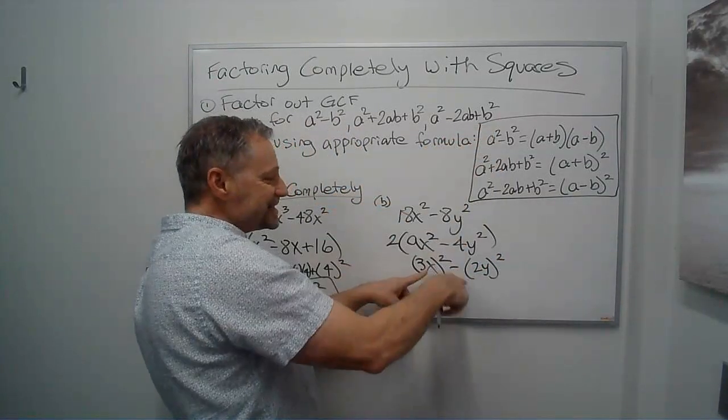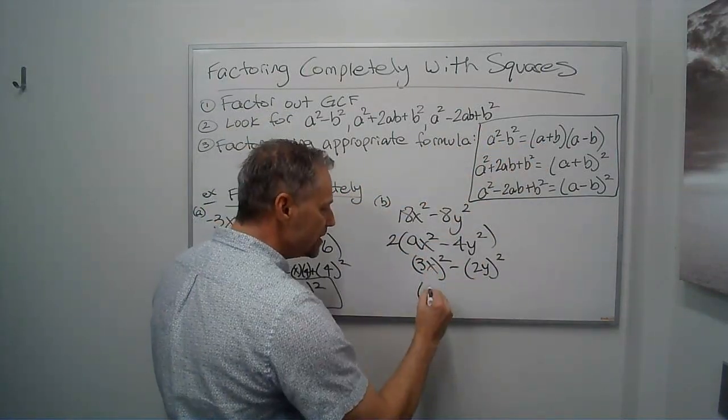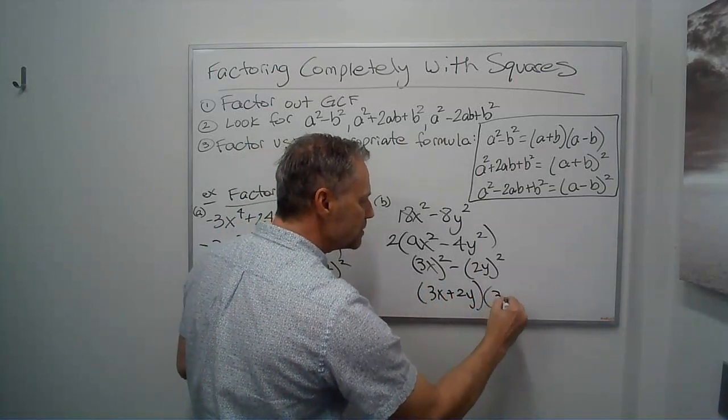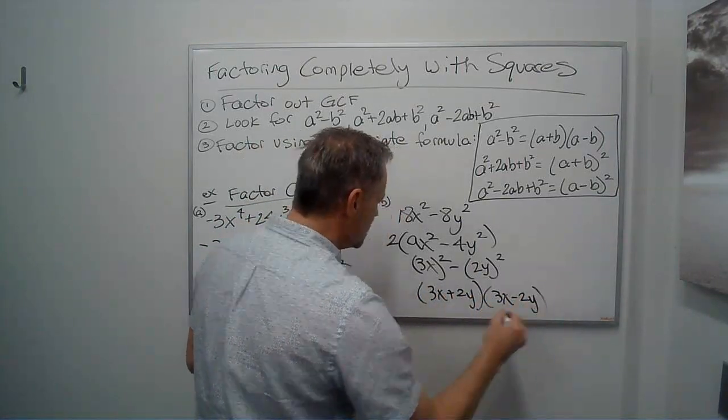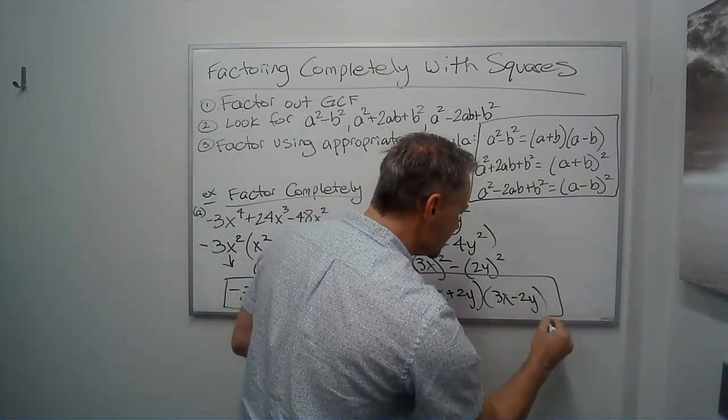So by this, it fits this pattern, so it has to be 3x plus 2y times 3x minus 2y. And then again, I just bring down my 2. Don't forget that.